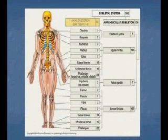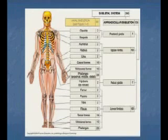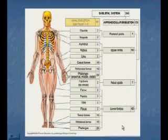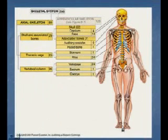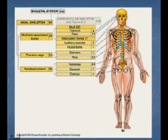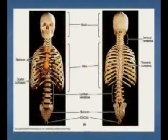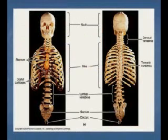The skeletal system will be divided and studied in two parts: the axial skeletal system and the appendicular skeletal system, both listed on this illustration. Because the skeletal system is divided into two components, it will be important for you to differentiate the two portions. We will describe this in a lot more detail when the skeletal system is covered during that portion of the lecture series.